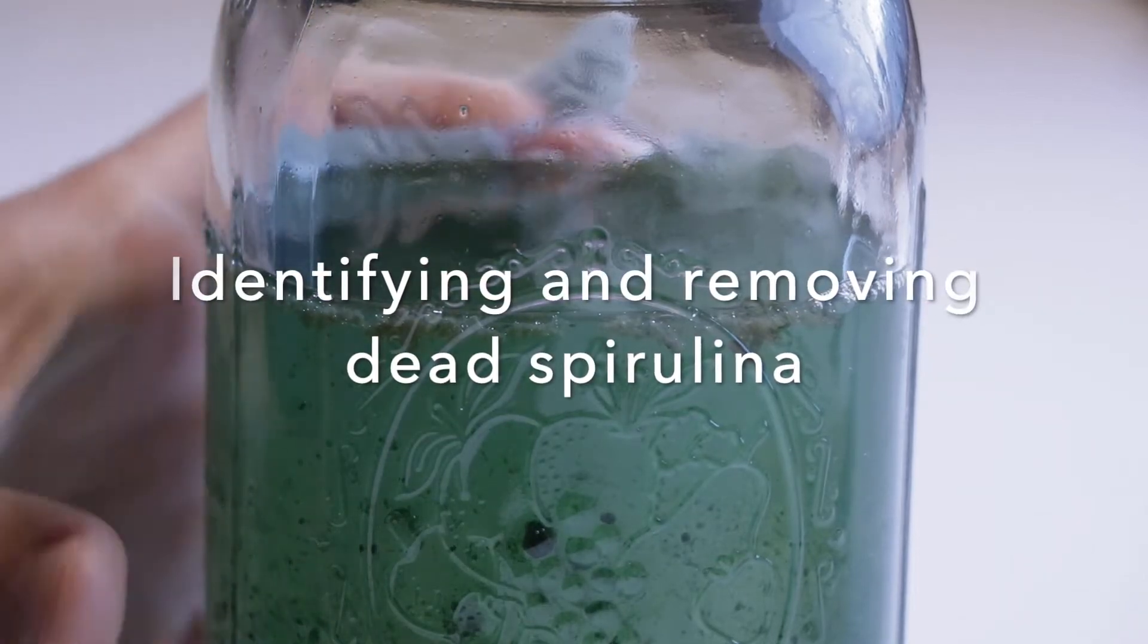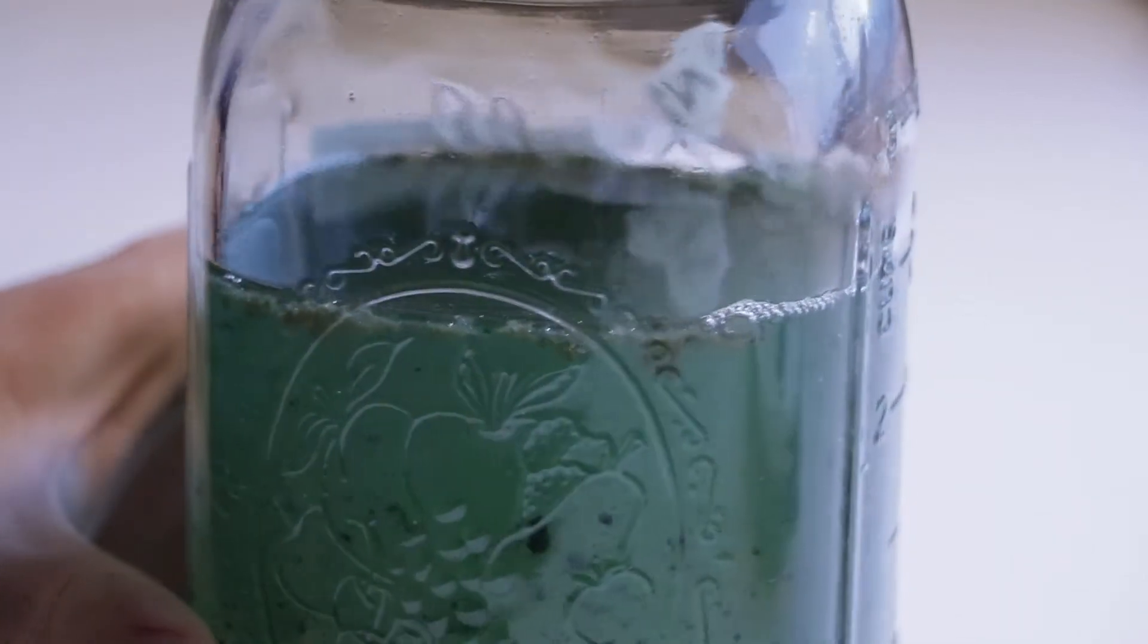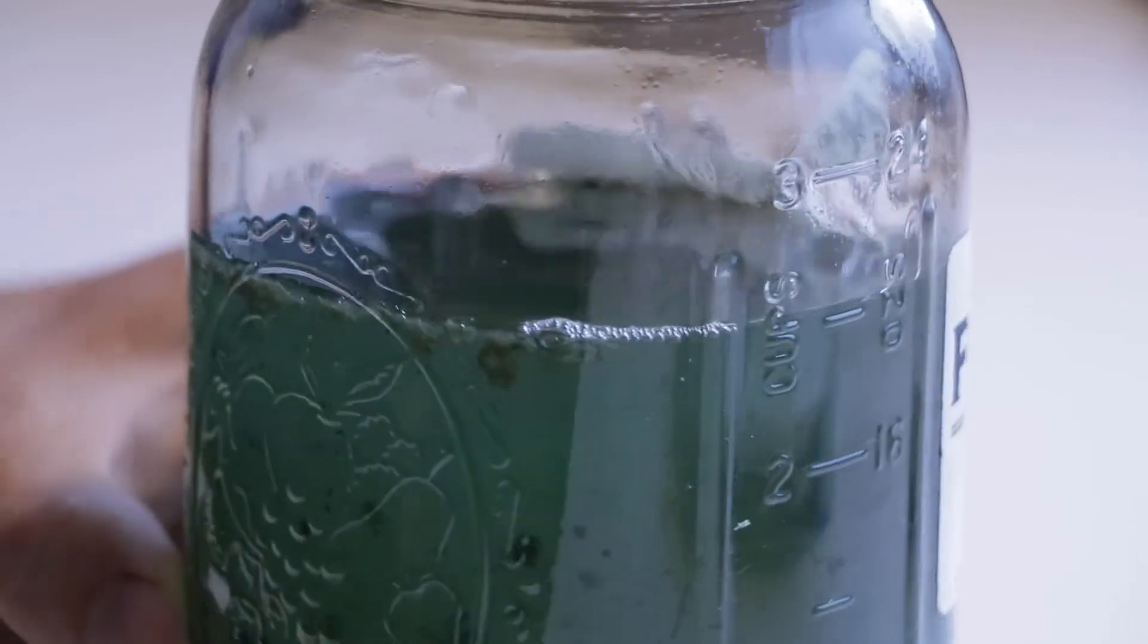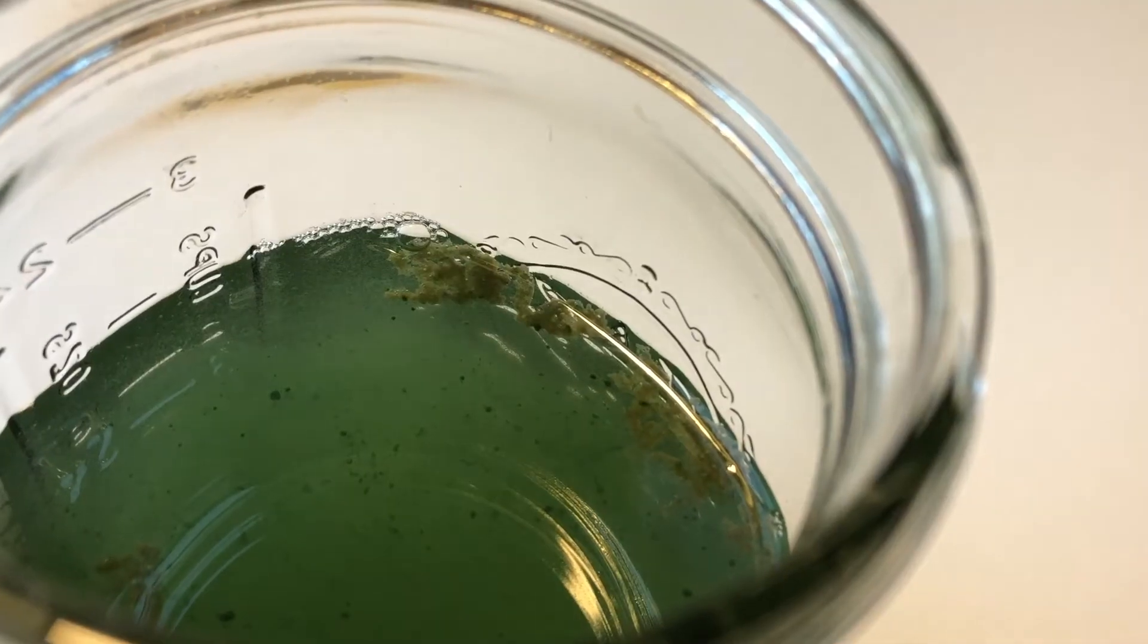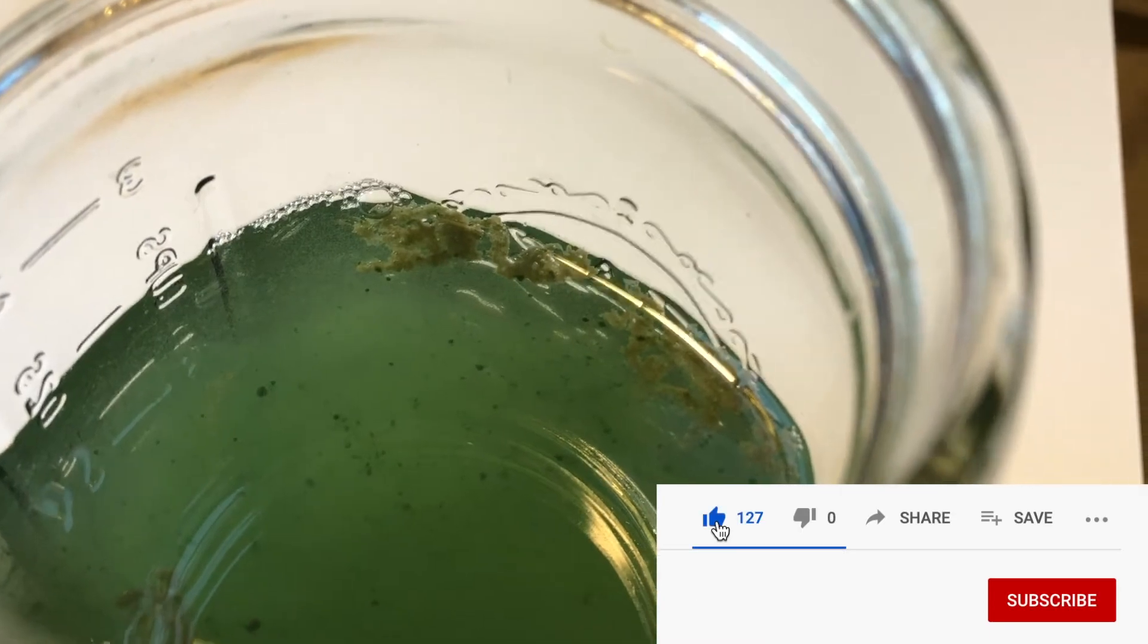As you're growing spirulina, you'll eventually find some clusters turn a sort of brown-yellowish clear and float to the top. It's completely normal and natural, like wilting leaves on a plant.